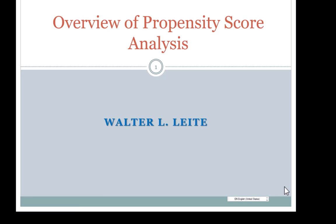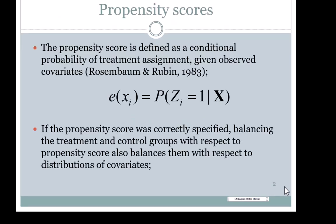This is Walter Leitchi and in this video I will provide an overview of propensity score analysis. Propensity scores are the conditional probability of treatment assignment given observed covariates. Rosenbaum and Rubin have shown that if the propensity score is correctly specified, balancing the treatment and control groups with respect to propensity score also balances them with respect to distribution of covariates. The propensity score is a summary that can be used to place covariates when doing a propensity score analysis.